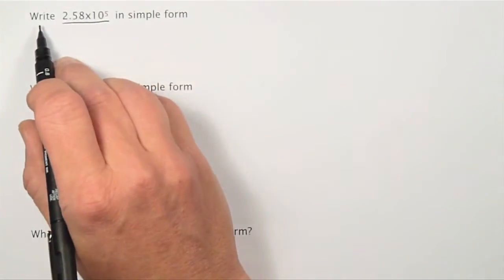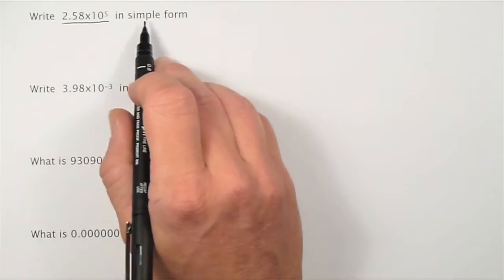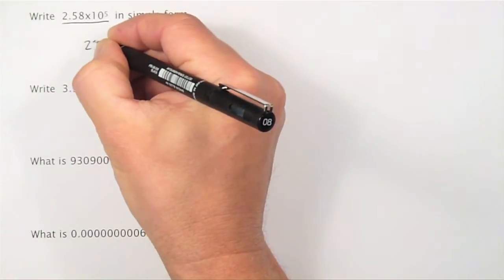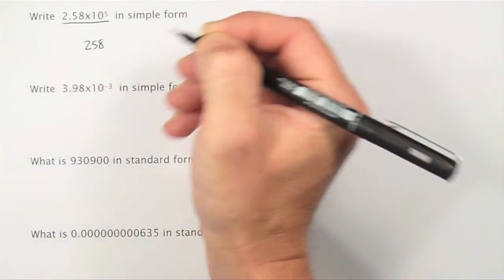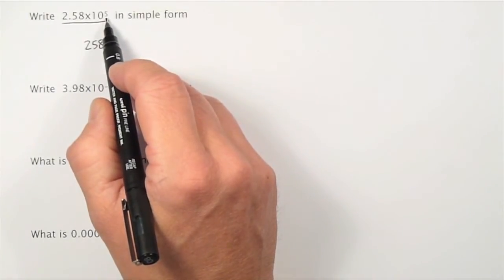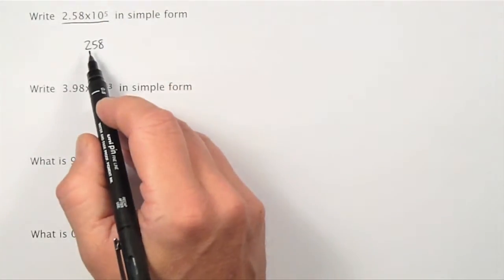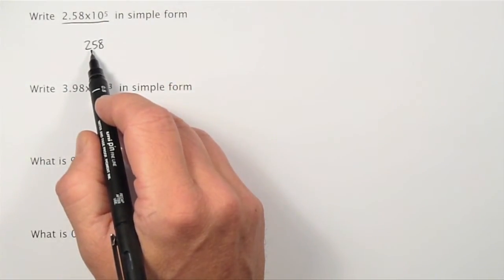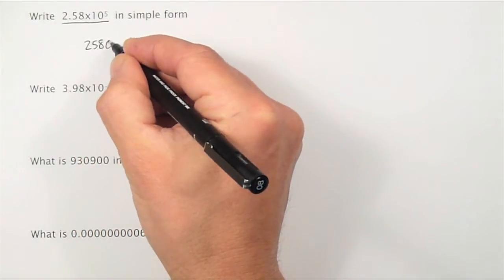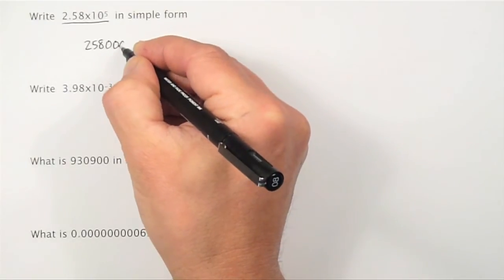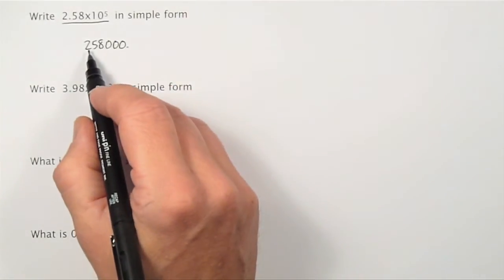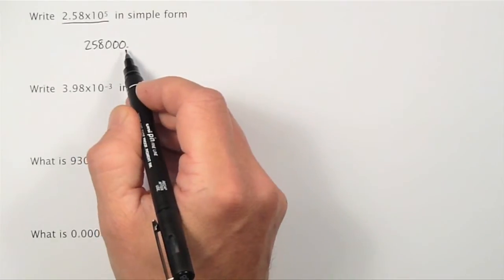Write 2.58 times 10 to the power of 5 in simple form. I'll write the number down: 2, 5, 8. The 5 tells me how many places I need to move the decimal point. The decimal point was here and I need to move it 5 places: 1, 2, I'll need another 0, that's 3, 4, 5. So the answer is 258,000.